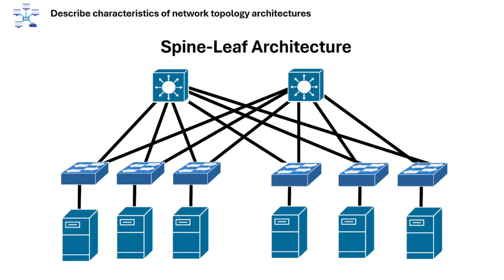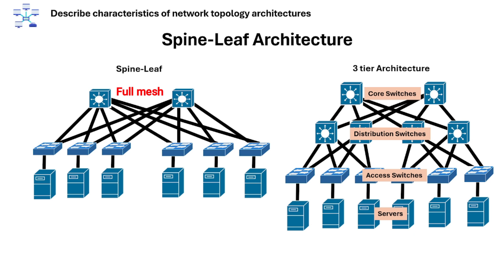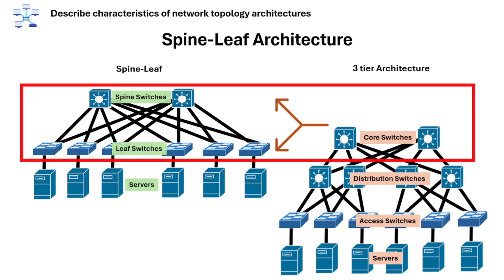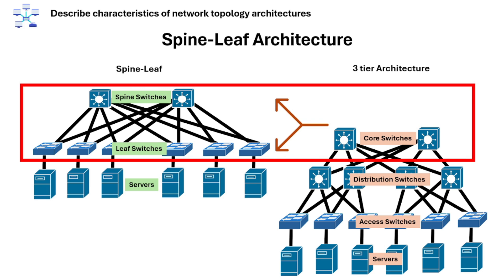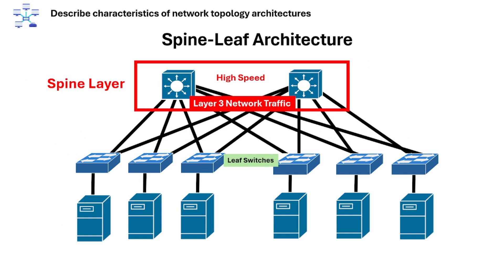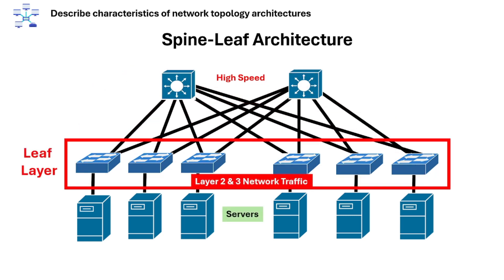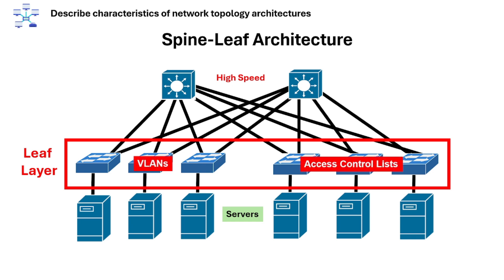Another topology is the spine-leaf architecture. The spine-leaf network topology is a variation of a three-tier network architecture in a full-mesh topology, where the core layer is split into two parts: a spine and a leaf. The spine layer is made up of high-speed routers or switches that connect all the leaf devices together, providing high-speed connectivity and acting as the primary point of interconnection. The leaf layer is made up of access switches that connect end-users or servers to the network, providing basic security features such as VLANs and access control lists. The spine-leaf architecture is common in data centers.